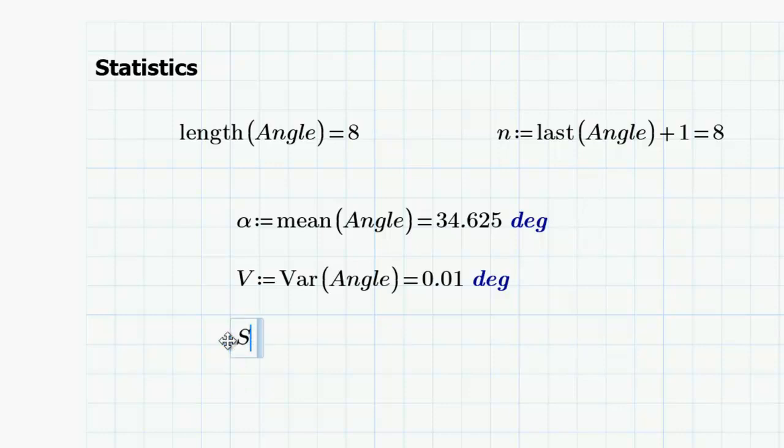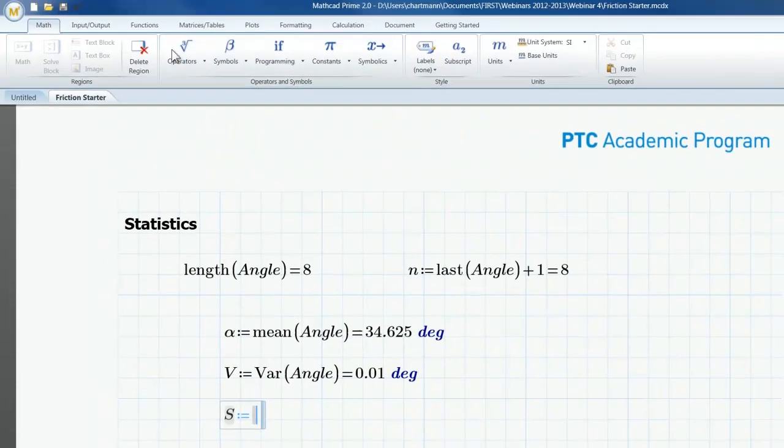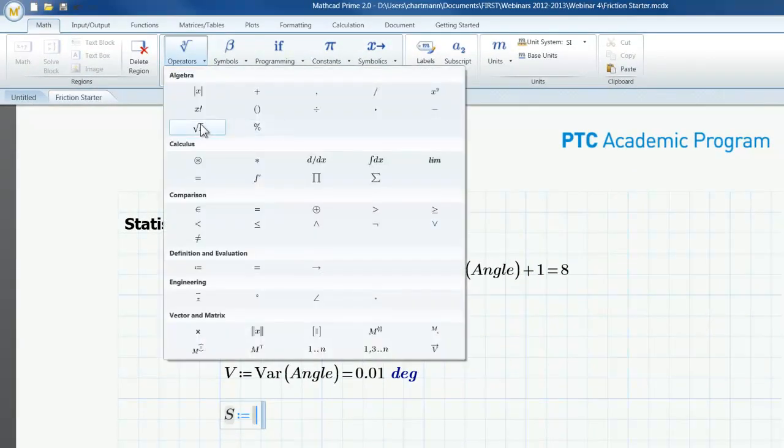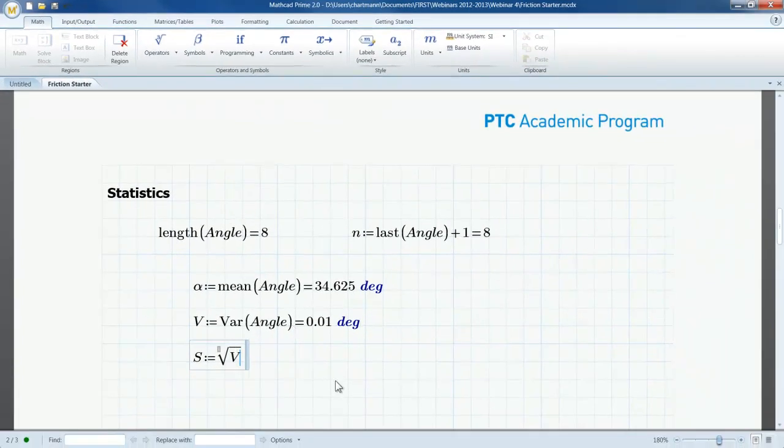And now there is a built-in statistical function, standard deviation. But I know that's going to be the square root of the variance. So I'm going to create a definition. Go to the math ribbon. Go to operators. I'm going to insert a square root. And then I'll type V in there. That value gets returned in radians. And then I can convert it to degrees. So now I have the mean angle, the variance in the angle measurements. And I have the sample standard deviation.